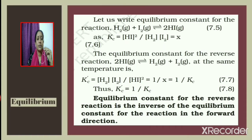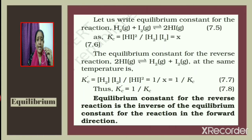For H₂ + I₂ ⇌ 2HI, let Kc = x. For the reverse reaction 2HI ⇌ H₂ + I₂, the equilibrium constant K'c = [H₂][I₂] / [HI]² = 1/x = 1/Kc. Thus, the equilibrium constant for the reverse reaction is the inverse of the equilibrium constant for the forward reaction.